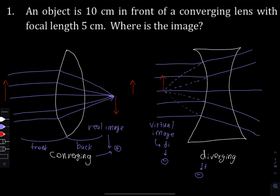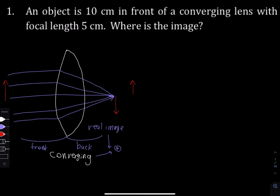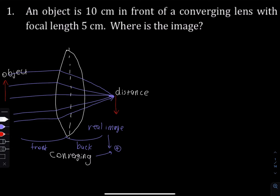So let's delete this diverging lens and do the problem. When we look at these equations we always want to measure the distance of the object and the distance of the image from the center of the lens. This measurement here would be the distance of the object, and here we would have the distance of the image.